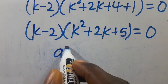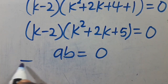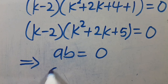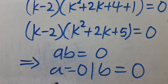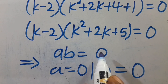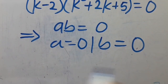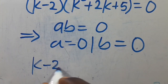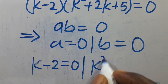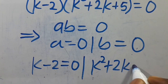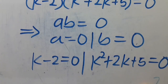Remember that when you have a multiplied by b equals 0, this implies that either a equals 0 or b equals 0 for this expression to be equal to 0. Applying it here, it's either k minus 2 equals 0, or k squared plus 2k plus 5 equals 0.